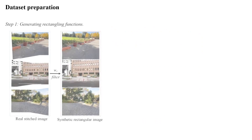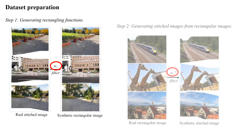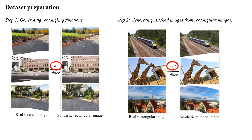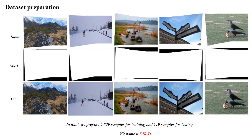We prepare our dataset in three steps. We first generate abundant rectangling functions by the traditional algorithm. Then we use the inverse warping of these functions to generate synthetic stitched images from real rectangles. Finally, we remove the distorted samples manually. Here are several dataset samples. In total, we prepare 5,839 samples for training and 519 samples for testing.